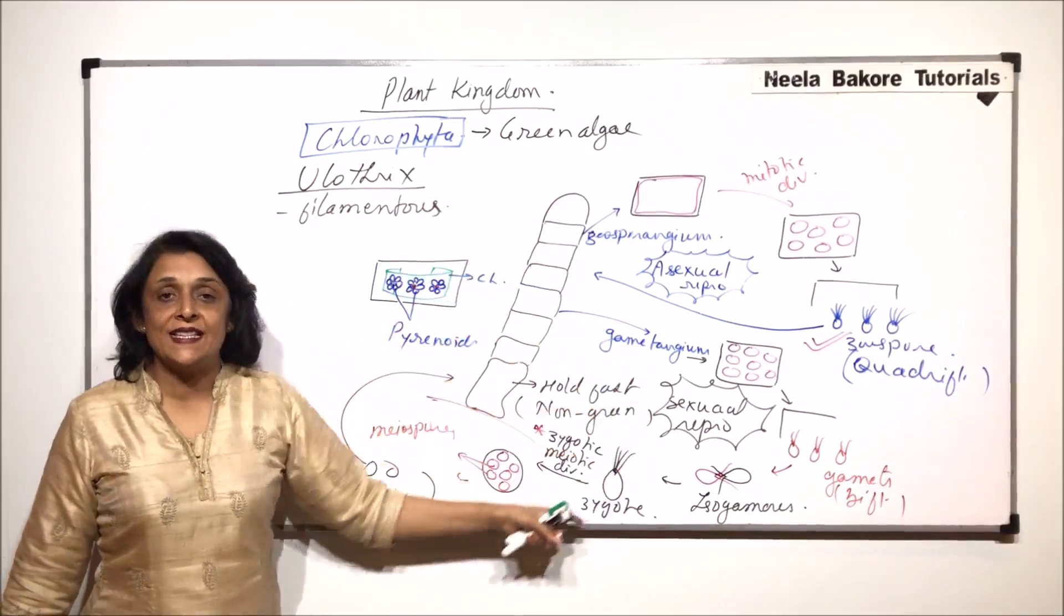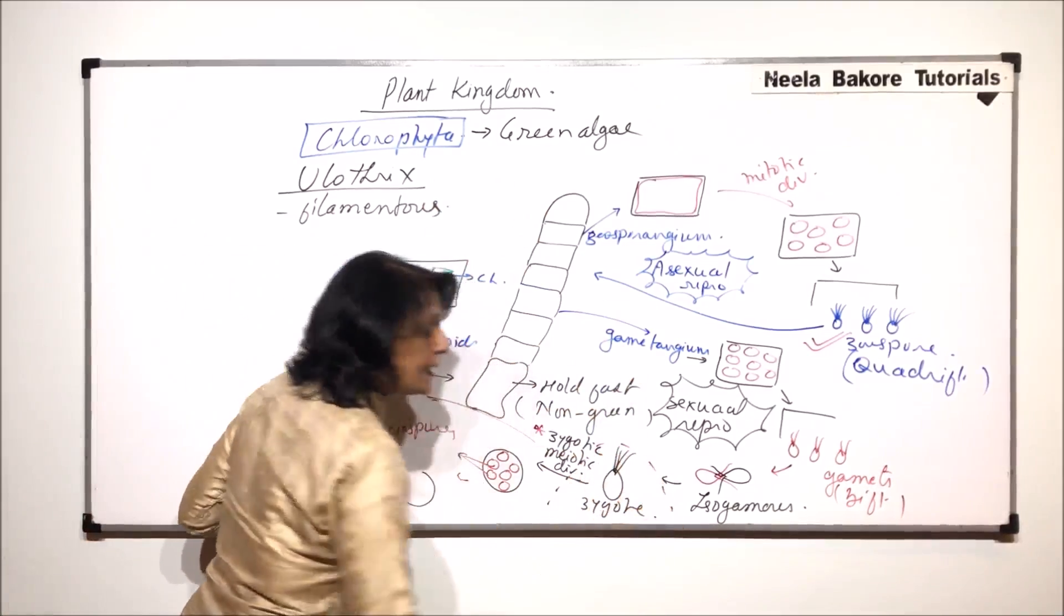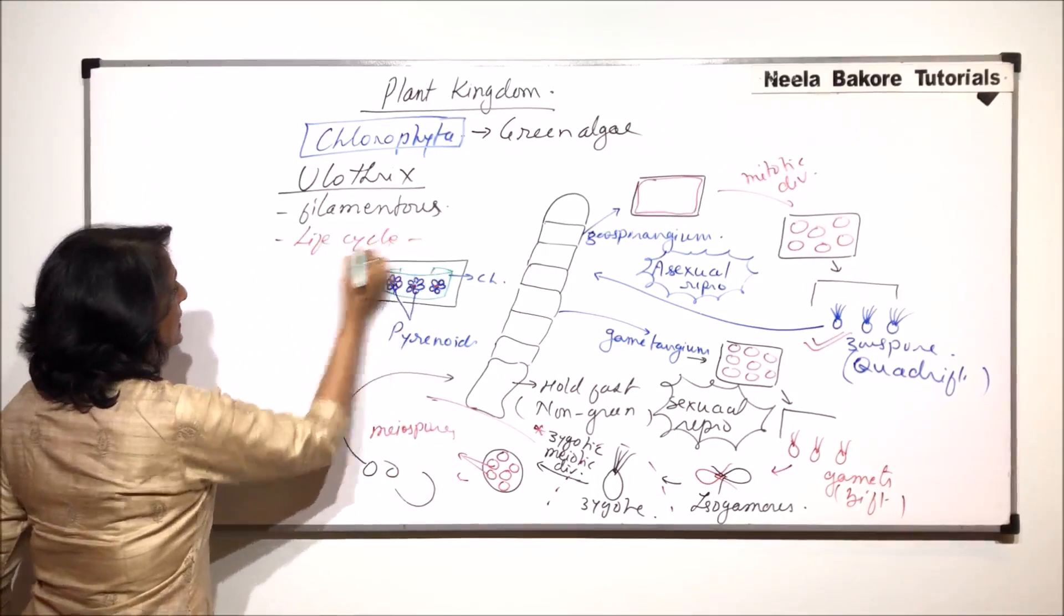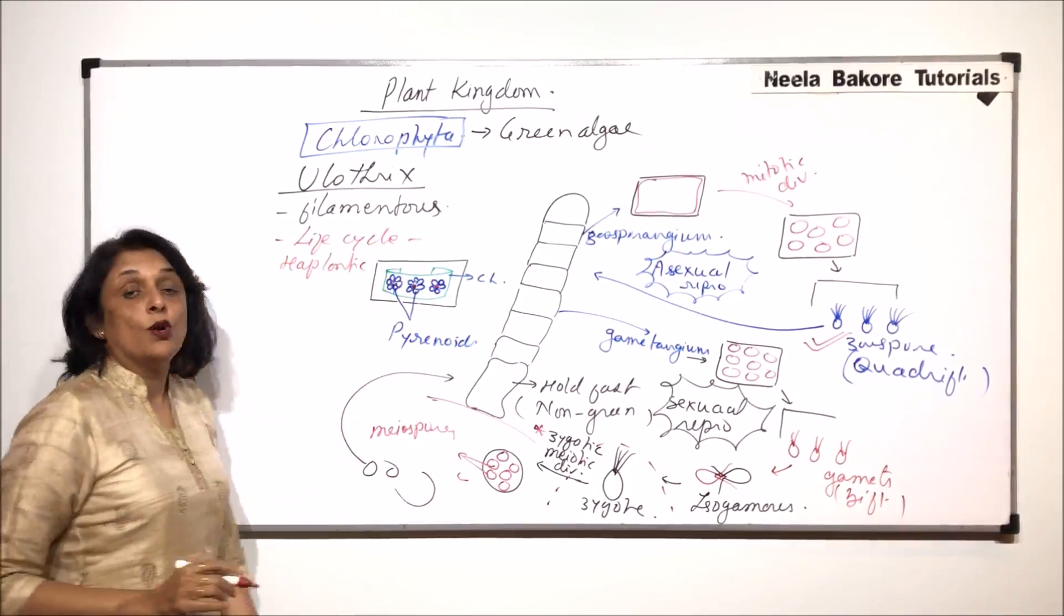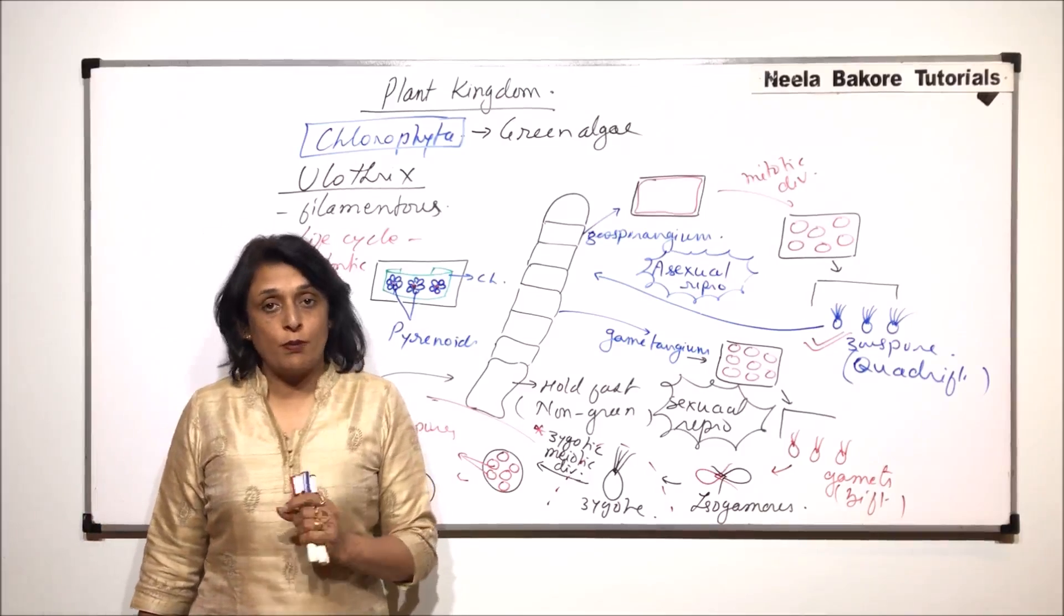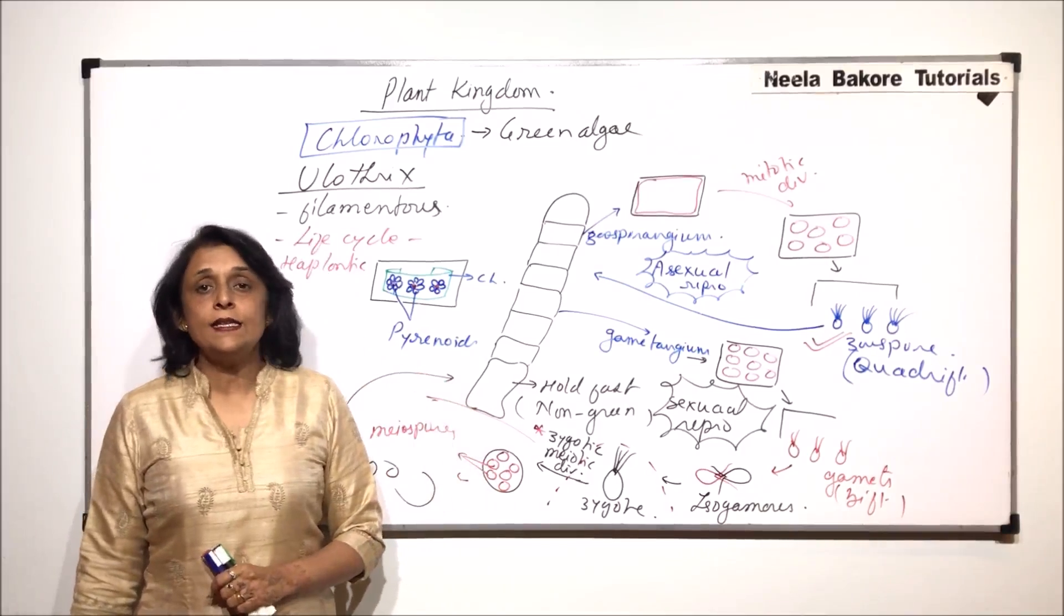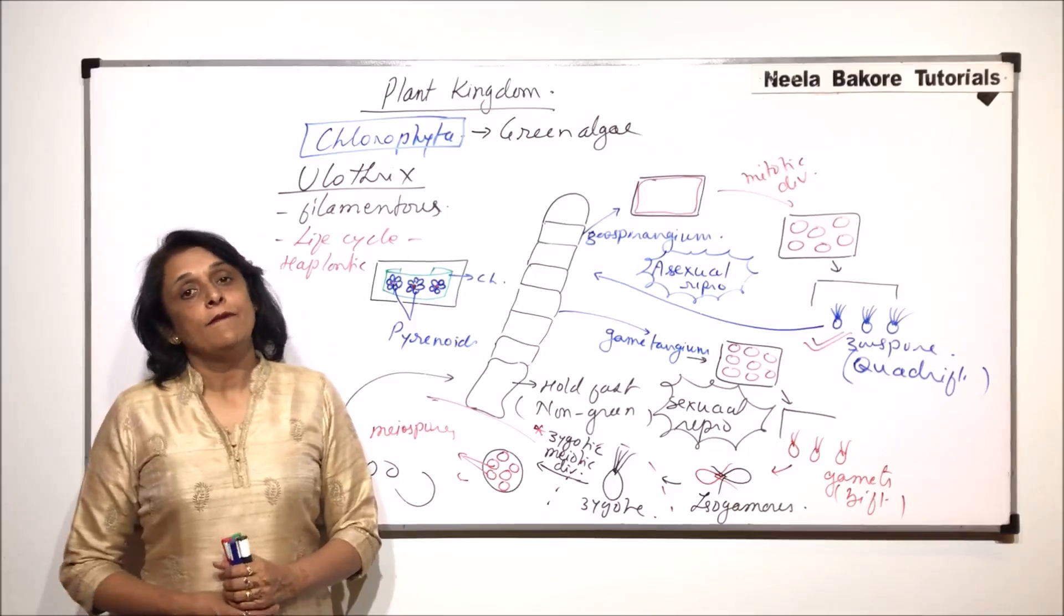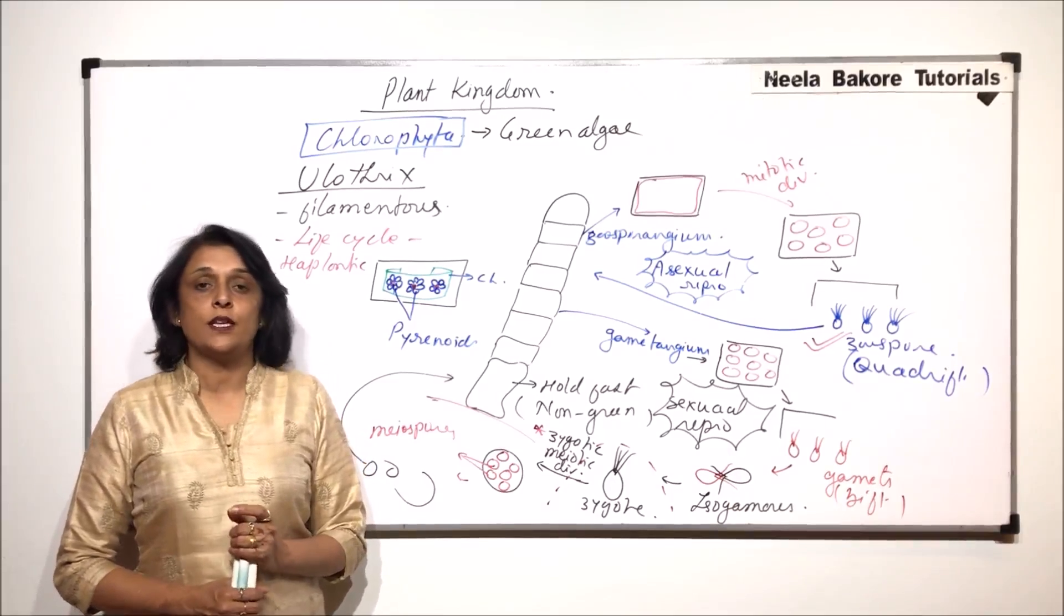Most of the stages are haploid except for the zygote. That means the life cycle is haplontic type. So in chlamydomonas also we saw that the life cycle was haplontic. And in ulothrix also the life cycle is haplontic. So this is another example of chlorophyta. Next example is of spirogyra which we will take up in the next video.